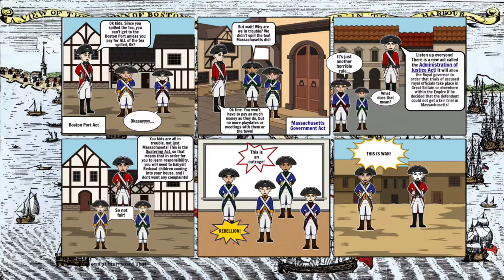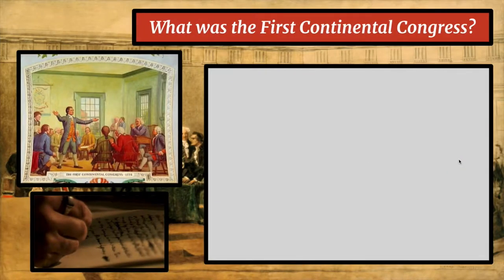This is a rather entertaining summary of the Intolerable Acts — in class I might press pause and do a dramatic reading. I don't know that I want to do that on YouTube, so I'll let you look at it. You can press pause. Our next left-side question is: What was the First Continental Congress?